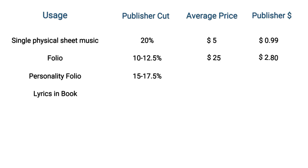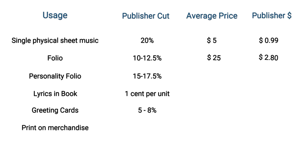For lyrics or music reprinted in books, the rate is approximately 1 cent per unit, with a $200 minimum attached. For greeting cards, the publisher will usually request 5 to 8% of wholesale. Reprints on clothing, such as t-shirts, usually run from 8 to 11%. Advertising usages, whether in newspapers, magazines, or billboards, normally pay a flat fee that can be $25,000 or more.